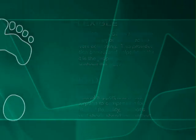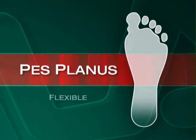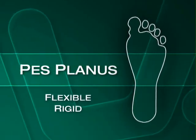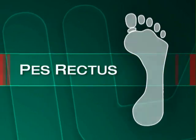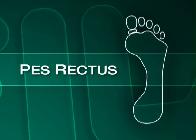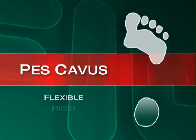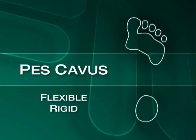So we look at five basic types. Pes planus, with two subgroups — is it flexible or is it rigid? Then we have pes rectus, which is a normal arch. And then the last grouping, which is pes cavus or the high arch — is it flexible or is it rigid? And then the last one is more complicated.